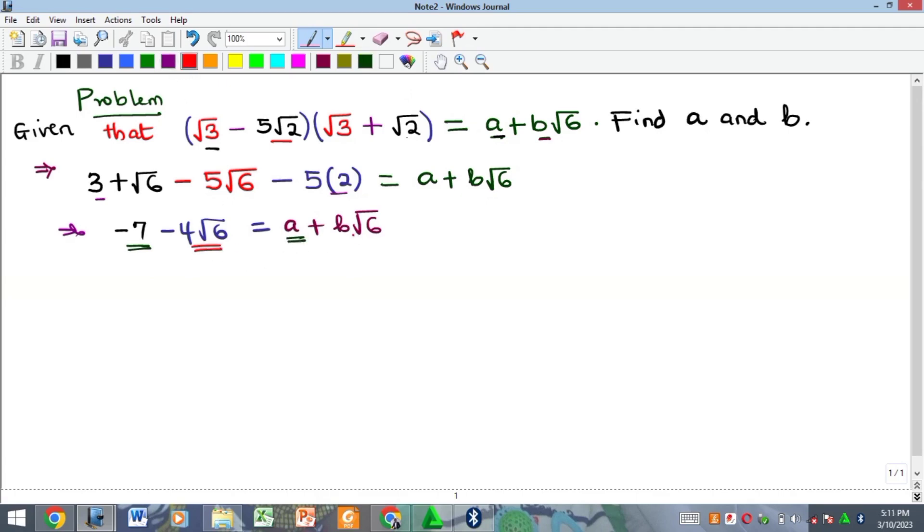What that means is that our a is equal to negative 7. What will be the value of our b? Our b is just the coefficient of root 6. You can see root 6 here, root 6 here. So that means our b is the whole of this, which is minus 4. And that is the end of this problem.